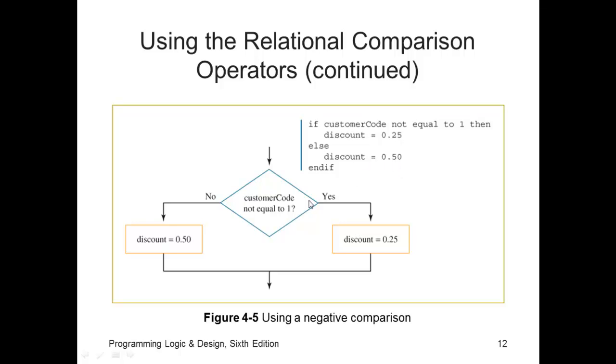You can simply rewrite this to be using positive logic rather than negative logic instead of saying not equal to. And I want you to notice before we change slides. Not equal to 1, discount 0.25. Notice that we're going to keep the negative or the false path on the left and the true path on the right. But notice the question will change and the actions will change.